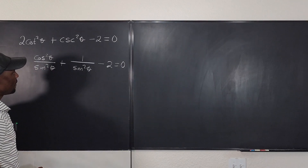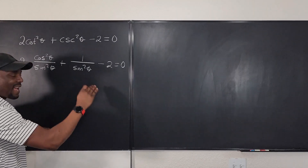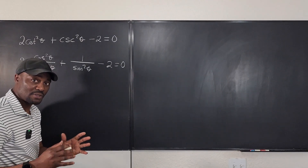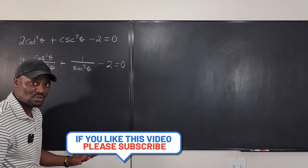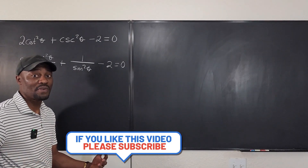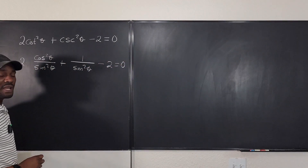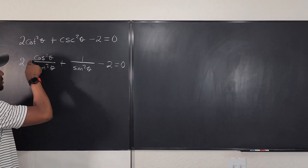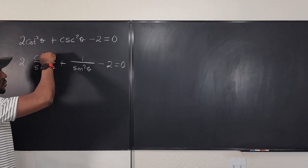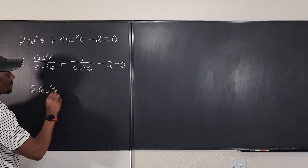Now, because I have a 2 here, let's get rid of the denominator. The denominator — remember, sine squared theta — every time you solve an equation, you want to get rid of the denominator or all fractions. So we're going to multiply each of the terms by sine squared theta. If I multiply this by sine squared theta, I'm going to end up with just cosine squared theta on top, which is going to be 2 cosine squared theta.